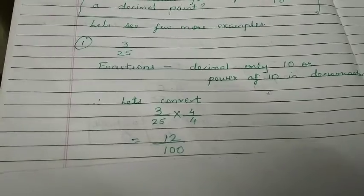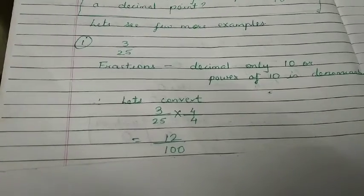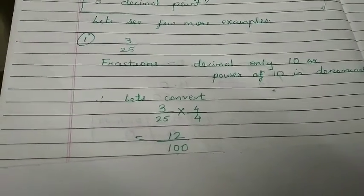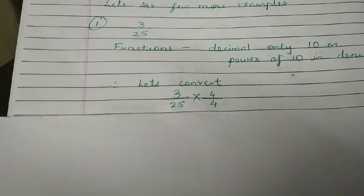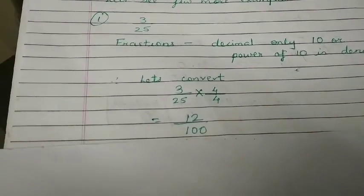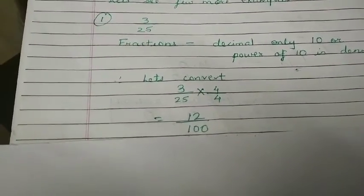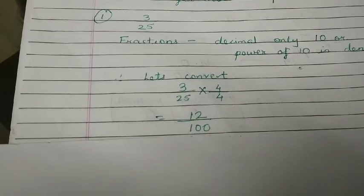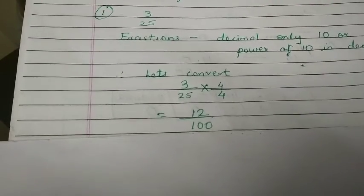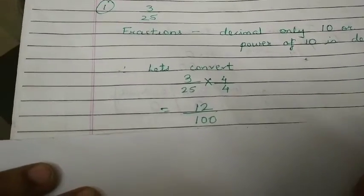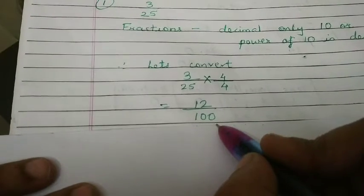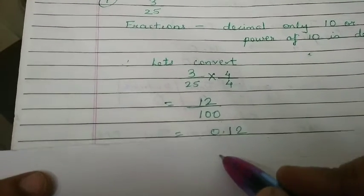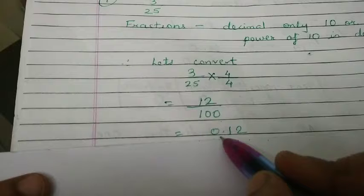So, you can now get the answer very easily. What it will be? Yes, of course. The answer will be very easier. That is, we have two zeros in denominator. So, you will know the answer. It is 0.12.